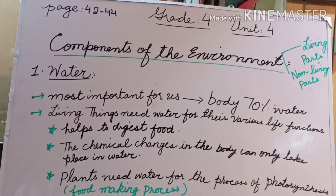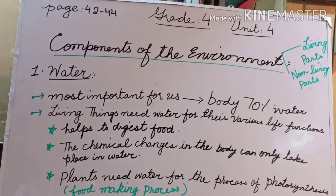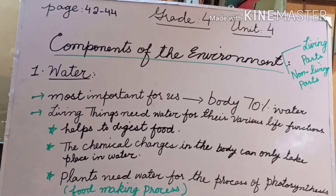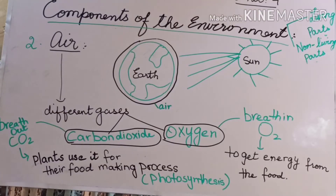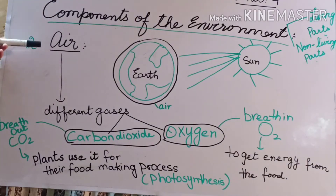All these processes — like how food changes in the body — take place because of water. Plants need water for the process of photosynthesis. Photosynthesis is basically known as the food-making process for plants. Plants are able to make their own food and they need four basic things, but the most important thing they need is water. So the first component of the environment is water.